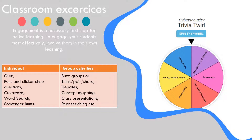In group activities, you can use buzz groups — short discussions done in pairs or groups of three to solve a problem or agree on a definition — or debates on serious issues to encourage participants to cooperate and explore a topic. Debates pit competitive groups or individuals against one another to argue their position. Groups can also work on problem or concept mapping, and for longer-term engagement, participate in group projects and classroom presentations, which encourage peer teaching.